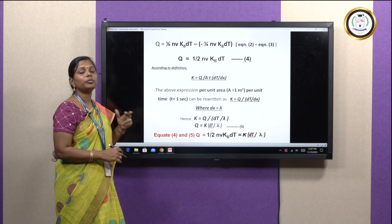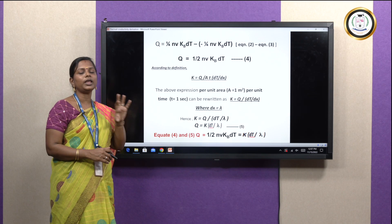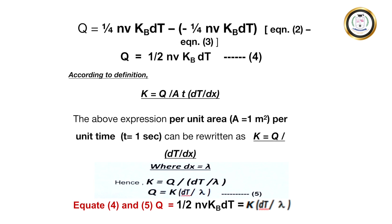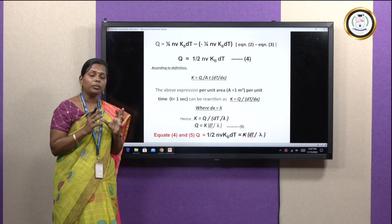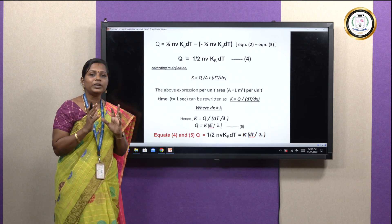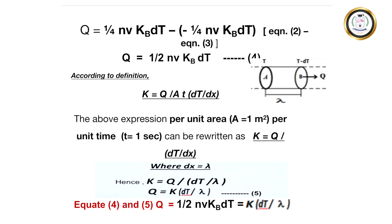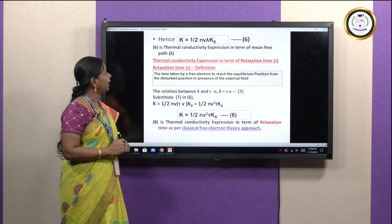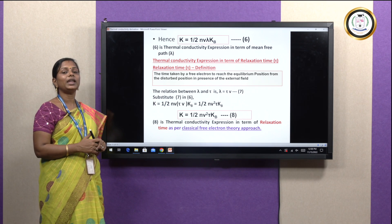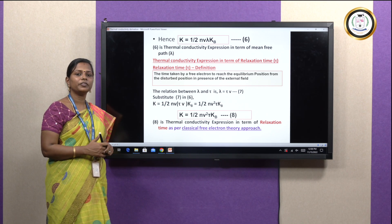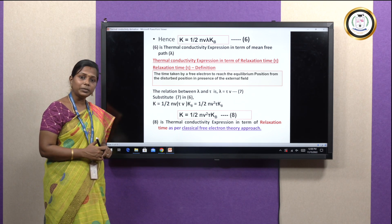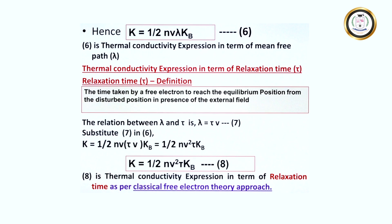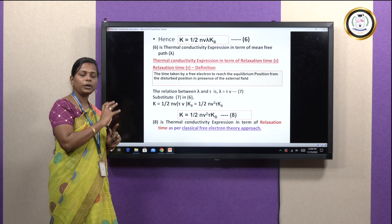Equations 4 and 5 both express the amount of heat energy — one from experiment, one from definition. Equating both: (1/2)NVK_B dT equals K × dT/lambda. Solving for thermal conductivity K, we get equation 6: K equals (1/2)NV·lambda·K_B, where N is the total number of free electrons per unit volume, V is average velocity, lambda is mean free path, and K_B is the Boltzmann constant.